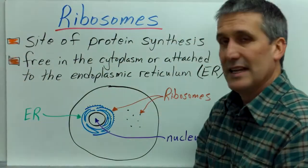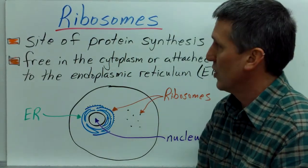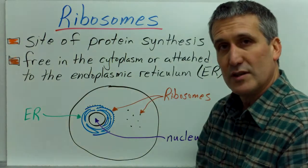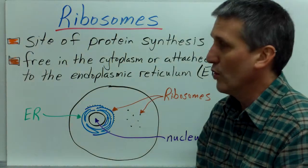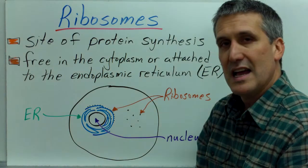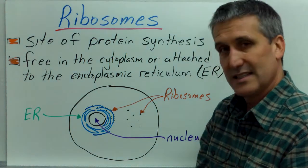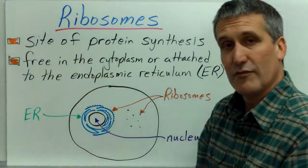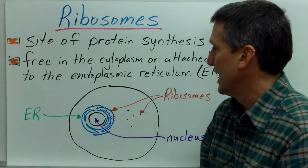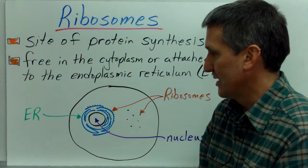The last structure is the ribosome. This is not actually a membrane structure, but it is the site of protein synthesis and a very important structure. Even prokaryotic cells have ribosomes so they can perform protein synthesis. In eukaryotic cells, ribosomes are either free in the cytoplasm or attached to the endoplasmic reticulum, which we'll talk about in the next lecture.